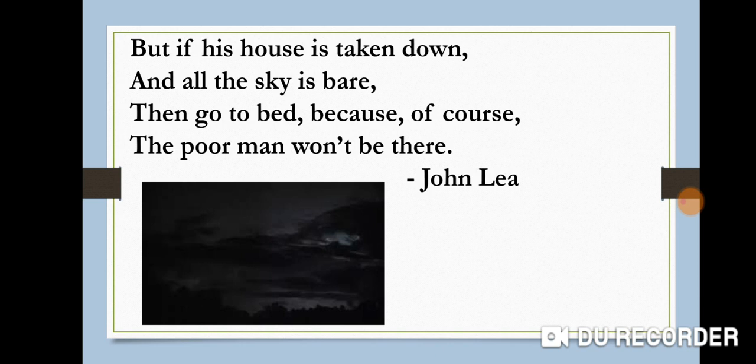Hope you understood the poem. It's a beautiful poem which pictures the moon as a silver house. The poem The Silver House written by John Lee refers to the moon as the house of a lonely man. Our poem name is The Silver House and it is picturized on the moon — a full moon.